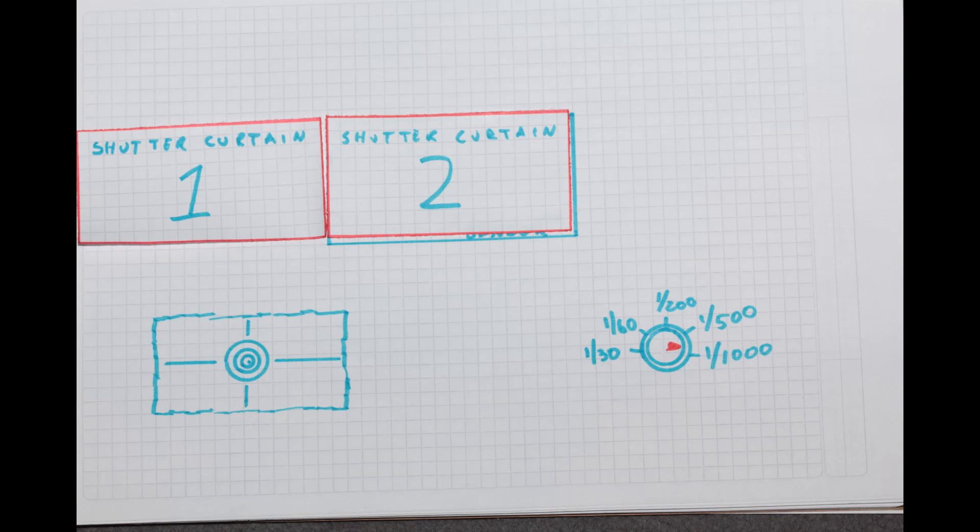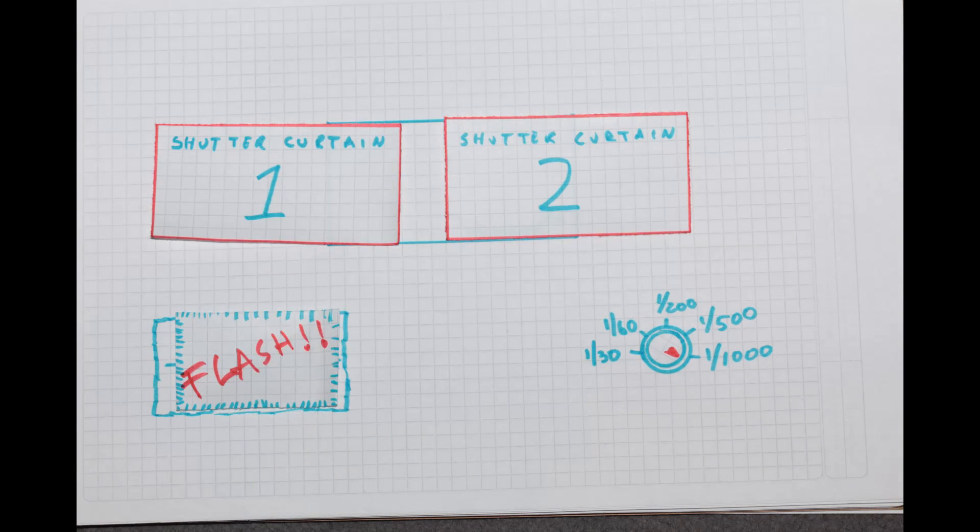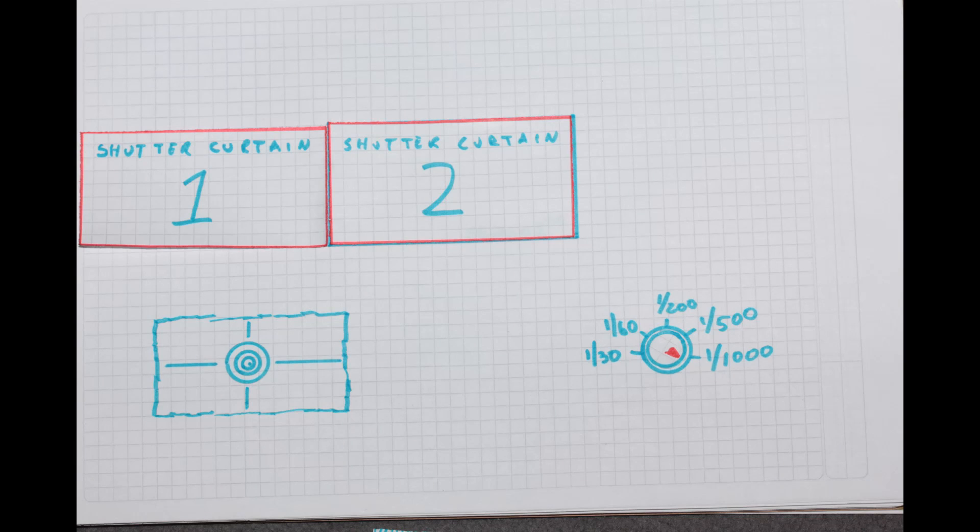Right, now, let's first take a quick look at what happens when we fire the flash normally. The curtains move together, but there's only a small gap between them. So when the flash goes off, only a small part of your sensor is correctly exposed.